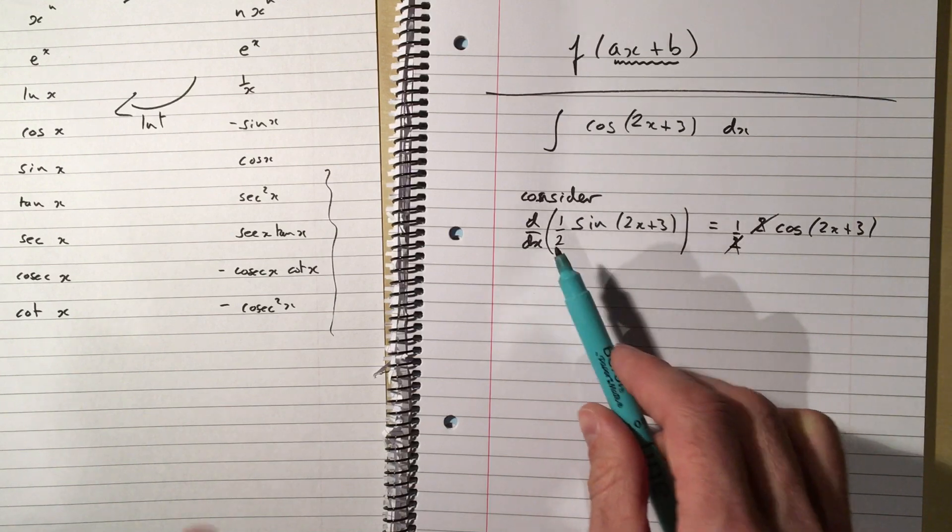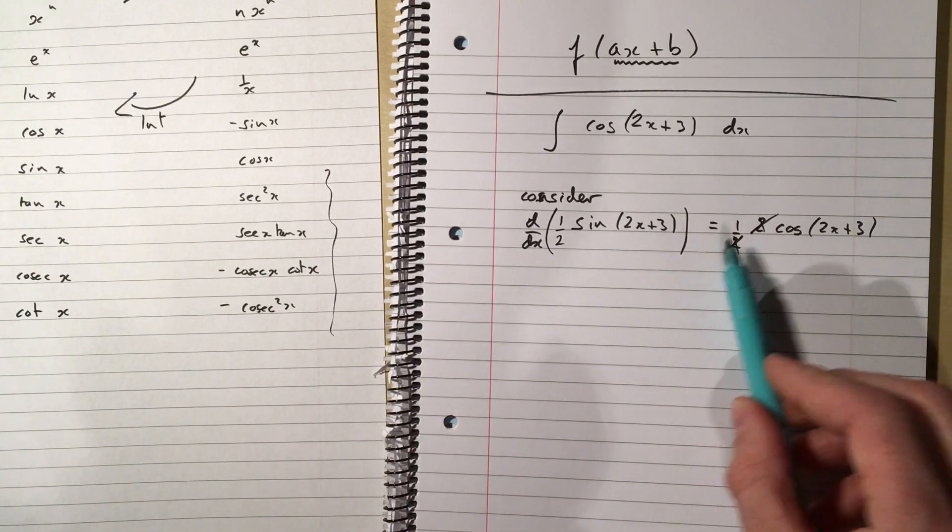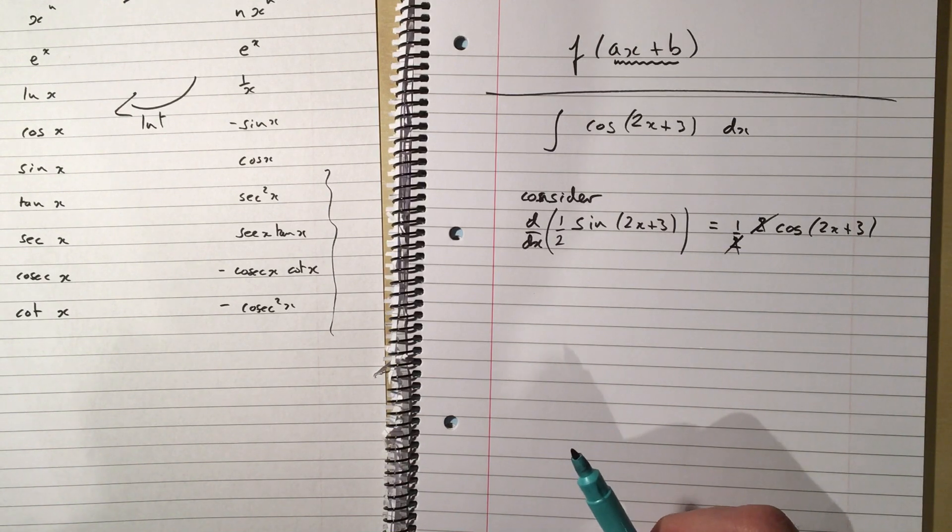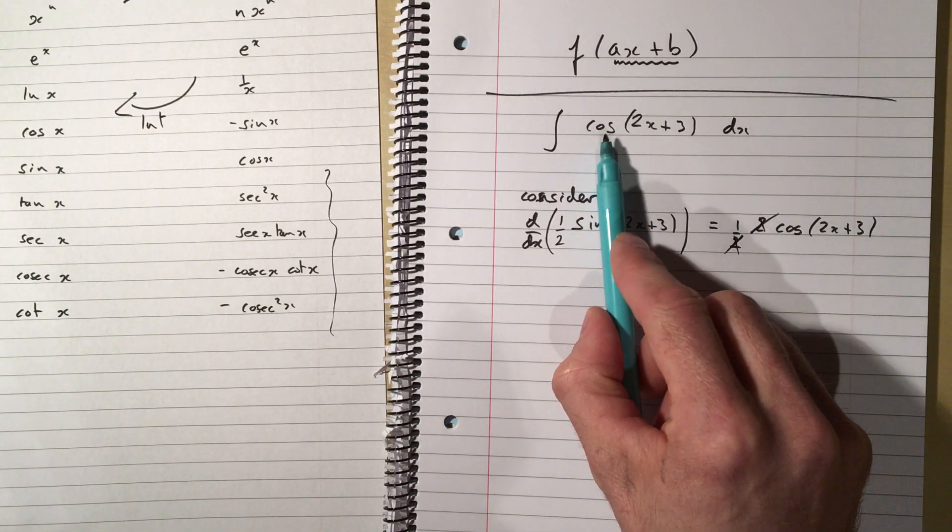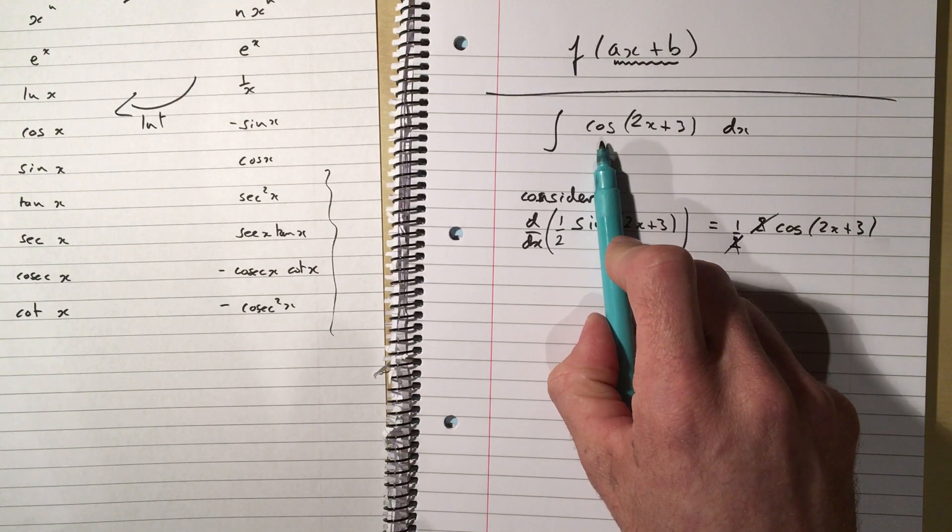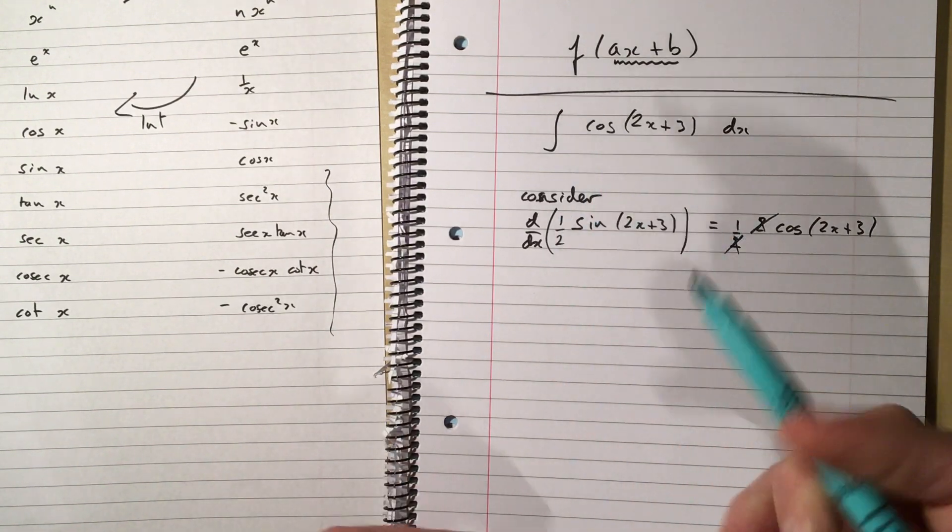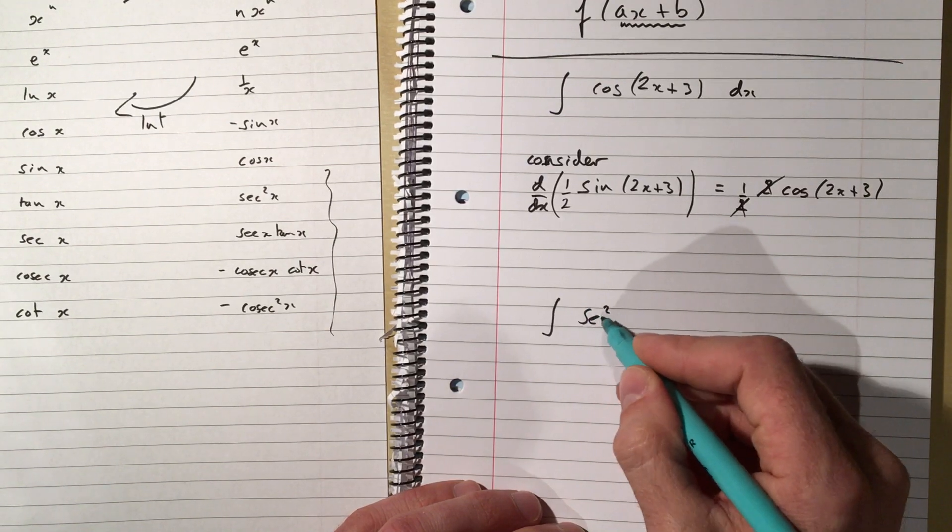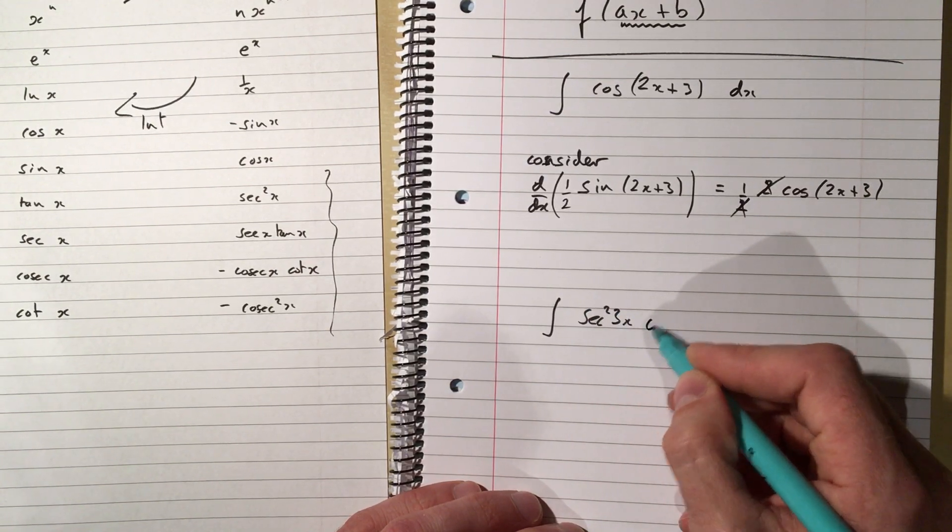I picked a half to go in front because I knew that after the differentiation, the half would still be in front, and it would clear this 2 out, and I'd be left with cos of 2x plus 3. So the way that I like to do these is, whatever's in the integral sign, I think, well what would that have come from? So let's take another example, sec squared of 3x with respect to x.